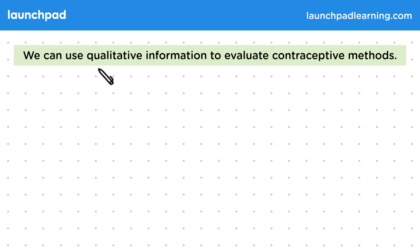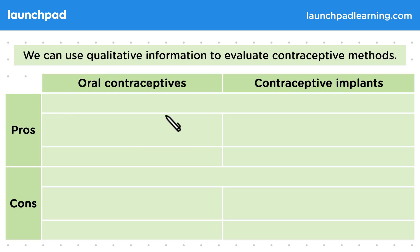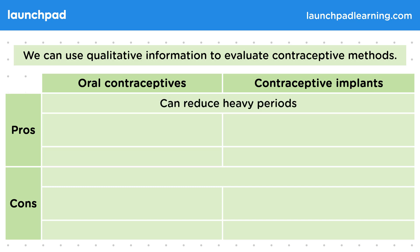We can also use qualitative information to evaluate contraceptive methods. Remember that qualitative data is language-based and descriptive, compared to quantitative which is numbers-based. In this table we can compare the pros and cons of oral contraceptives and contraceptive implants. A pro for both is that they can reduce heavy periods.